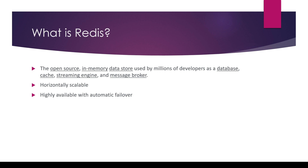If we talk about what Redis is, there is a nice definition on the Redis home page. It says: Redis is the open source, in-memory data store used by millions of developers as a database, cache, streaming engine, and message broker. First of all, Redis is open source, and second, this is an in-memory data store. The keyword here is 'data store' — it can be used to store data, and being in-memory means it doesn't have to persist data to files the same way databases do.